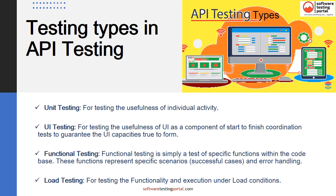Let's talk about the testing types in API testing. Unit testing is for testing the usefulness of individual operations. UI testing is for testing the usefulness of UI as a component from start to finish. Functional testing is a test of specific functions within the code base. Load testing is for testing the functionality and execution under load conditions, and takes on a few different scenarios to ensure peak performance. The first scenario is called the baseline, which tests the API against the theoretical regular traffic the API expects in normal day-to-day usage.